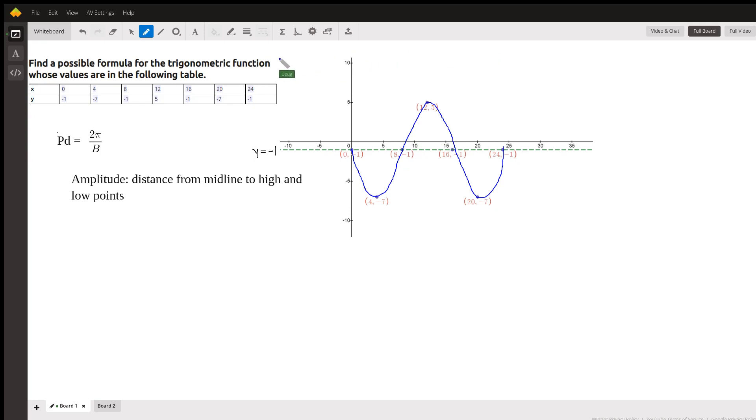Okay, and if you do that, you can see that the midline, the points along this horizontal green dashed line, is at y equals negative one. That means we will use, if we were using a sine function...